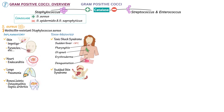Scalded skin syndrome, another desquamating condition, is most common in infants and young children. In our illustration, we've shown the characteristic red and flaky areas of skin. Lastly, Staphylococcus aureus can also cause food poisoning.